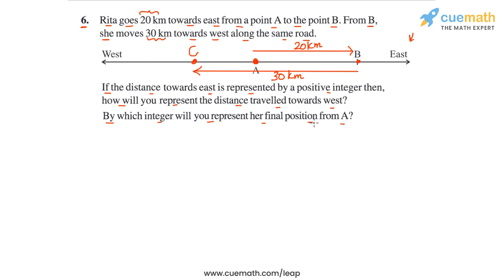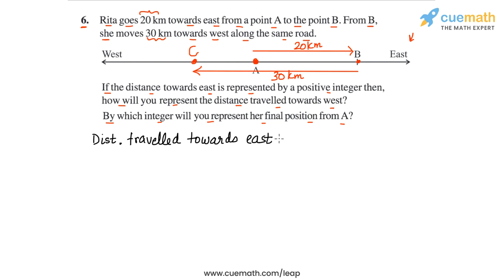We are told that any distance traveled towards the east is represented using a positive integer. In this case, because Rita has traveled 20 km east from A to B, we represent this distance covered as plus 20 km.